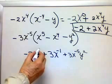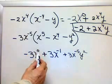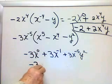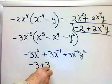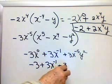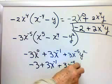You think you're done, but you can never leave an x^0 in the answer. So x^0 becomes 1, and so -3 + 3x^-1 + 3x^-5y^2.